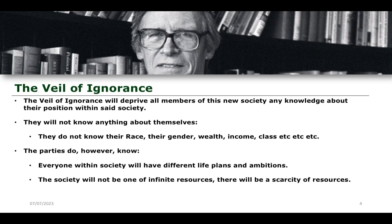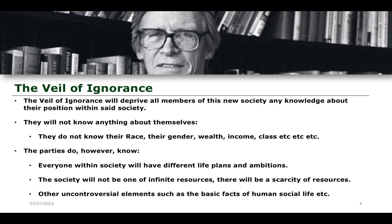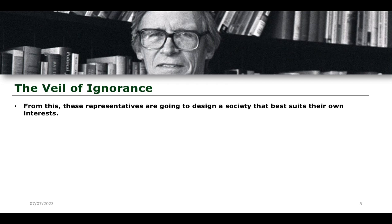The reason why Rawls formulates this final point about scarcity is because we do have a scarcity of resources in society — resources aren't infinite — and so we have to construct a way in which we can get the best benefit for the most amount of people, making the absolute most out of this scarcity of resources. Other uncontroversial things we know about within the veil of ignorance are basic facts of human social life. The most important thing is that you do not know whereabouts within society you are placed — whether you are black or white, whether you are a man or a woman, whether you're rich or poor, whether or not you have a good job or a bad job, whether or not you were born into a wealthy family or into a working-class family — you don't have a clue where you are.